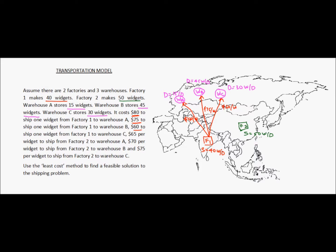For factory two, the cost is $65 per widget to ship from factory two to warehouse A.